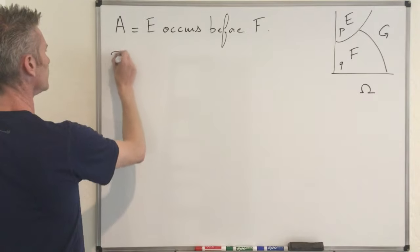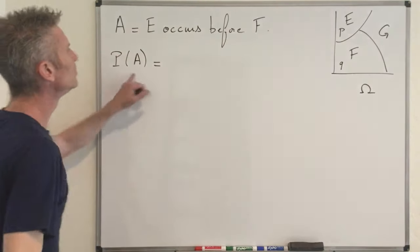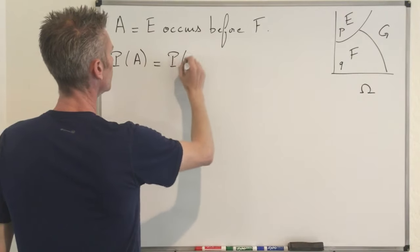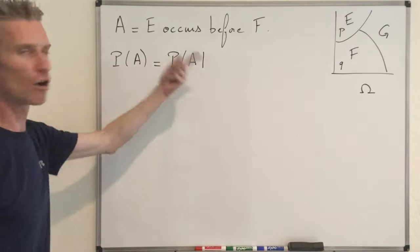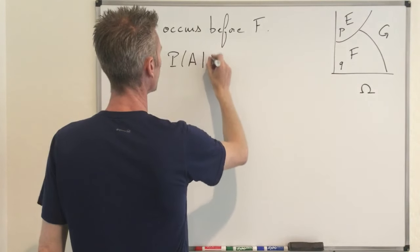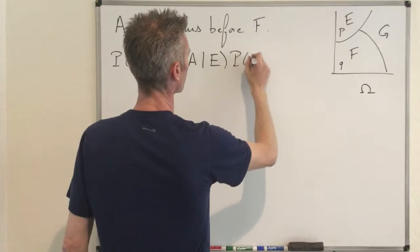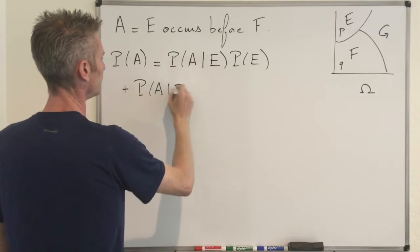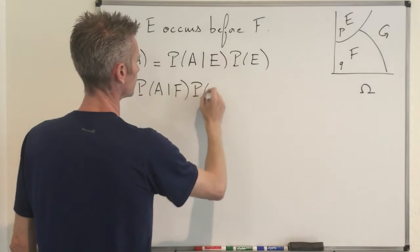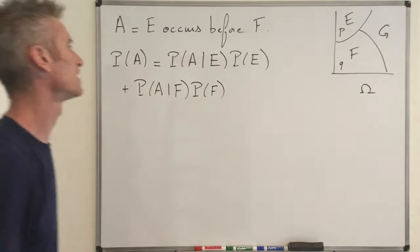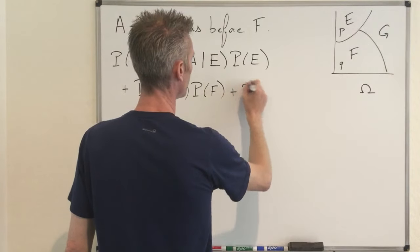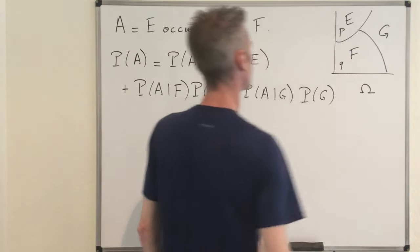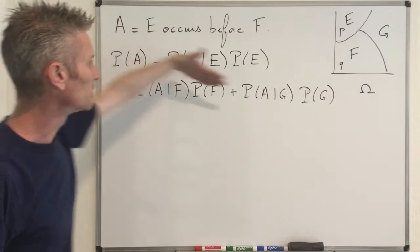Then, we can start with saying that P of A is going to be equal, because E, F, G form a partition of the sample space, that's going to be the probability that A occurs. So, E occurs first, given that the first thing that happens is E, times P of E, plus the probability of A given that F occurs first at step one times P of F, plus the probability of A given G times P of G.